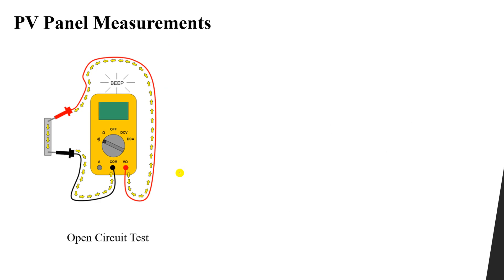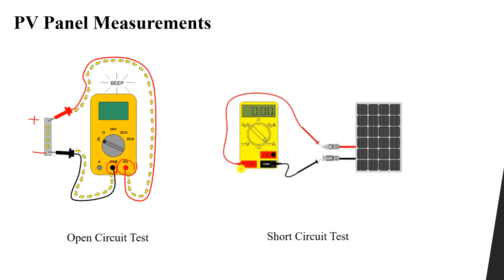To measure open circuit voltage, you connect one terminal to the voltage port of the avometer and the other terminal to the COM. So the positive and negative terminals of the panel connect to the V port and COM respectively. For measuring short circuit current, the same COM connection is used but you move the red probe from the voltage port to the ampere port — red to ampere, black to COM.